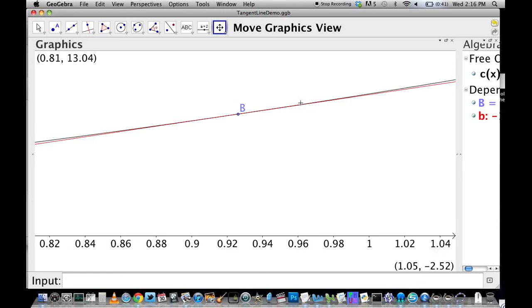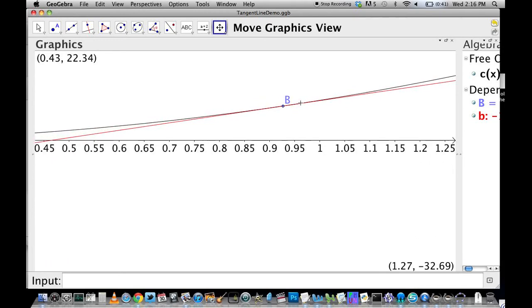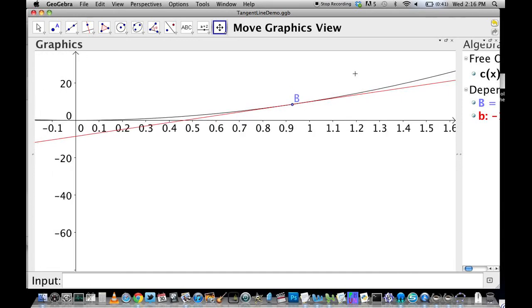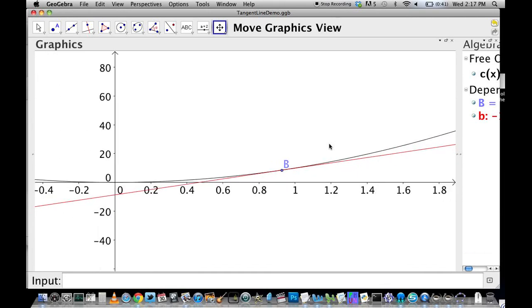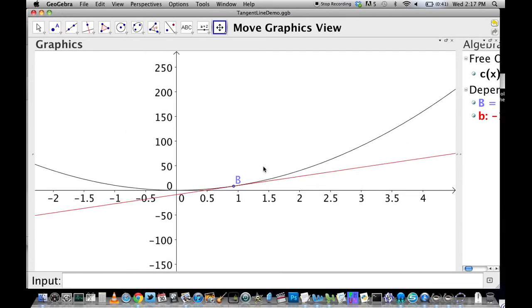But if I zoom out of this graph, you'll start to see that one of them is not so straight. That is, the red line looks still pretty straight, but you're starting to be able to see that the black line is pretty curved.